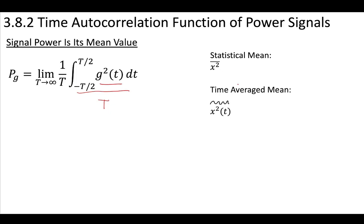There's the statistical mean, however, in this case, for the power signal, this is a time domain function. And we're actually taking the average of this function over some time period, some period T. And so we'll call this the time average mean.